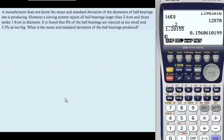A manufacturer does not know the mean and standard deviation of the diameters of some ball bearings. However, a sieving system rejects all ball bearings larger than 2.4 centimeters and those under 1.8 centimeters in diameter. 8% of the ball bearings are rejected as being too small, and 5.5% as being too big.